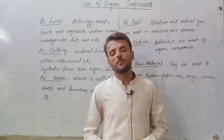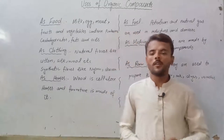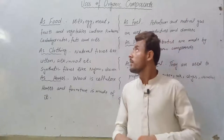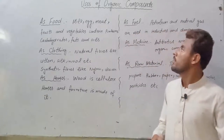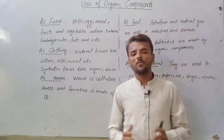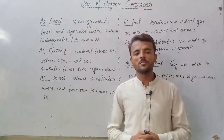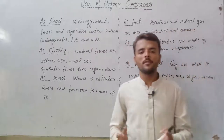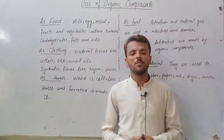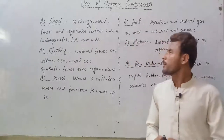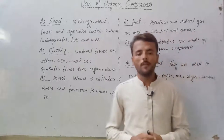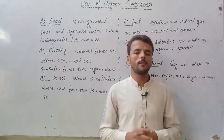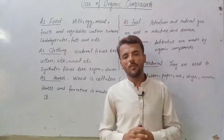Bismillahirrahmanirrahim, assalamu alaikum dear students. We were learning about chemistry chapter number three, organic chemistry. Yesterday we learned about the sources of organic compounds, and today we are going to learn about the uses of organic compounds. We have learned that animals and plants both are the sources of organic compounds.